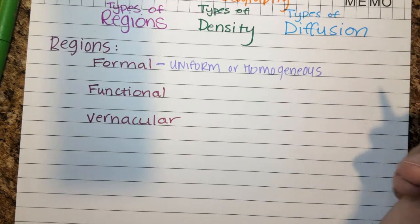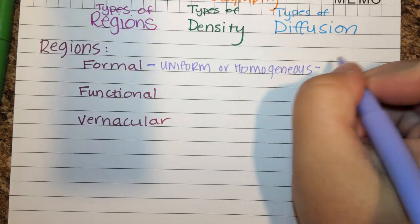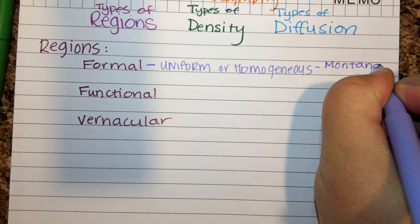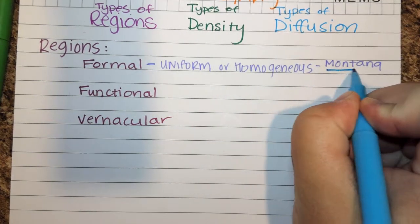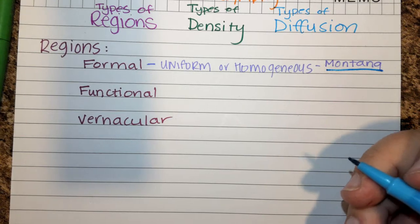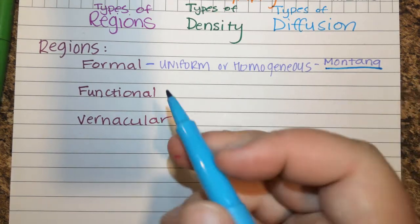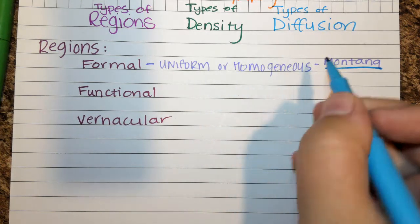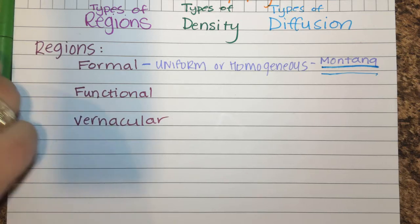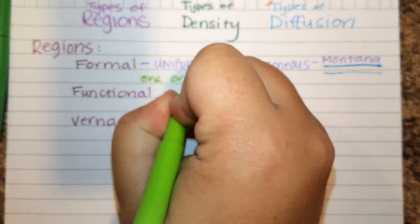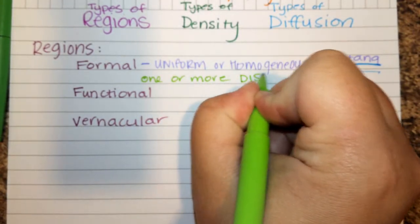An example of a formal region would be a state such as Montana. This is an area where everyone shares one or more distinctive characteristics — for instance, everyone is under the laws of Montana, or when looking at who they voted for for president, they voted mainly for a particular person. It refers to an area in which everyone shares one or more unique, distinctive characteristics.